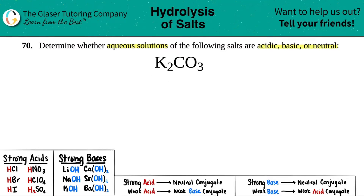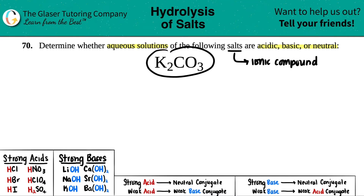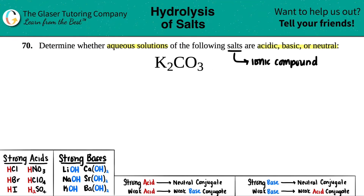We have to figure out whether K2CO3 is acidic, basic, or neutral. Remember, salts are just another way of saying an ionic compound, so there are both positive and negative things going on. In order to find out whether it's acidic, basic, or neutral, the first step is to break this up into its ions — we need to know where the break is.